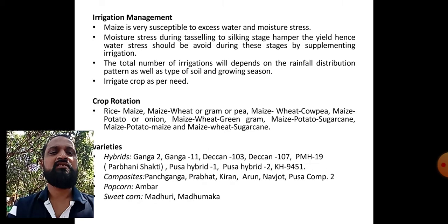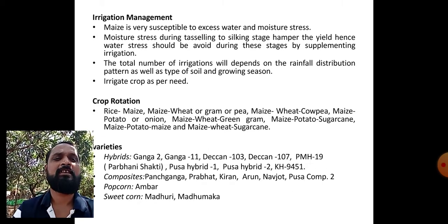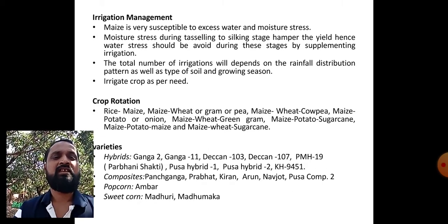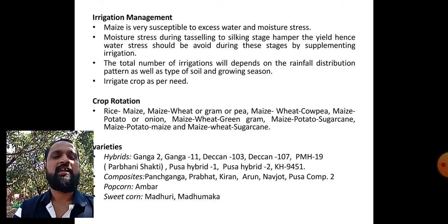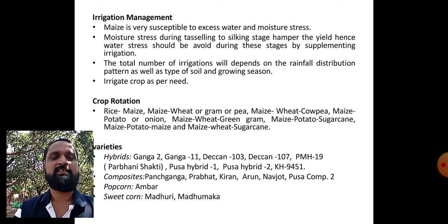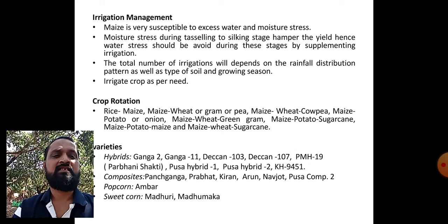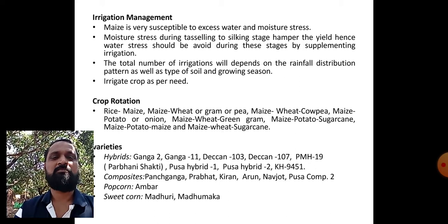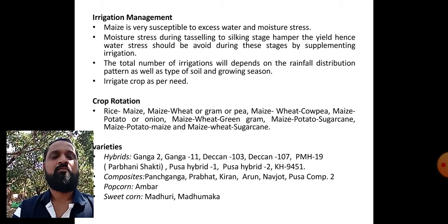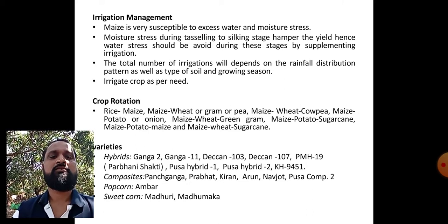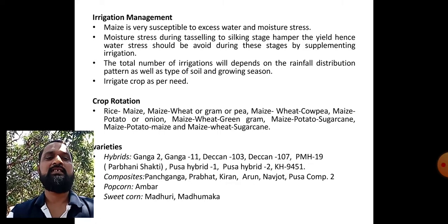Varieties - Hybrids: Ganga 2, Ganga 11, Deccan 103, Deccan 107, PMH 19 (Parbhani Shakti), Pusa Hybrid 1, Pusa Hybrid 2, KH 9451. Composites: Panchaganga, Prabhat, Kiran, Arun, Navjot, Pusa Comp 2. Amber is a variety popular for popcorn purpose, and for sweet corn, Madhuri and Madhumakka are most popular among farmers.